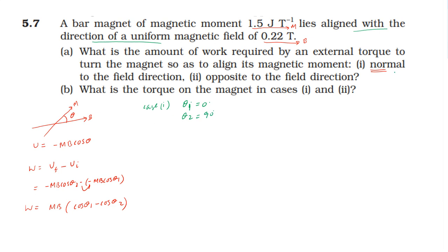If you look at the algorithm, then work done is equal to m1. 1.5 into 0.22 into cos theta 1. So this is simple. We can answer 1.5 into 0.22 multiplied by 0.33. Unit is joule.